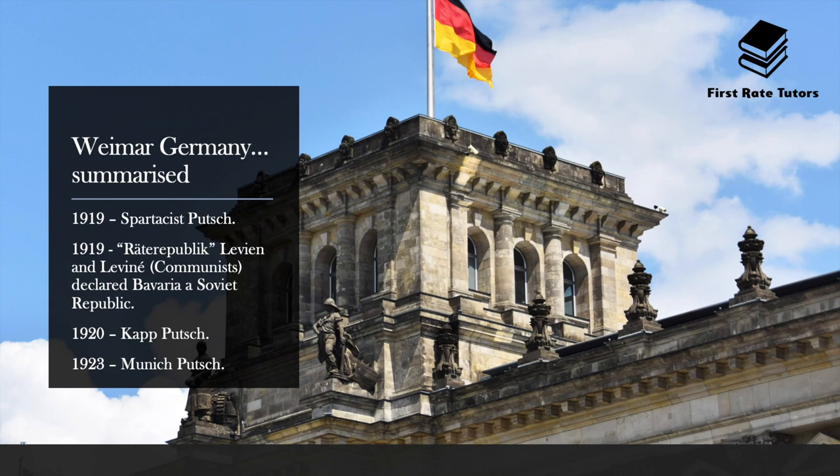In 1920, the extreme right — primarily under the Freikorps, which consisted of demobilised army generals and militia — led by Wolfgang Kapp attempted their own revolt, known as the Kapp Putsch. In 1923, Hitler came to the fore in German politics and attempted a putsch as well, known as the Munich Putsch because it started in Munich. It was ultimately unsuccessful and Hitler was jailed. In jail, he dictated Mein Kampf, his infamous manifesto that was later used by the Nazis to rally around their cause.